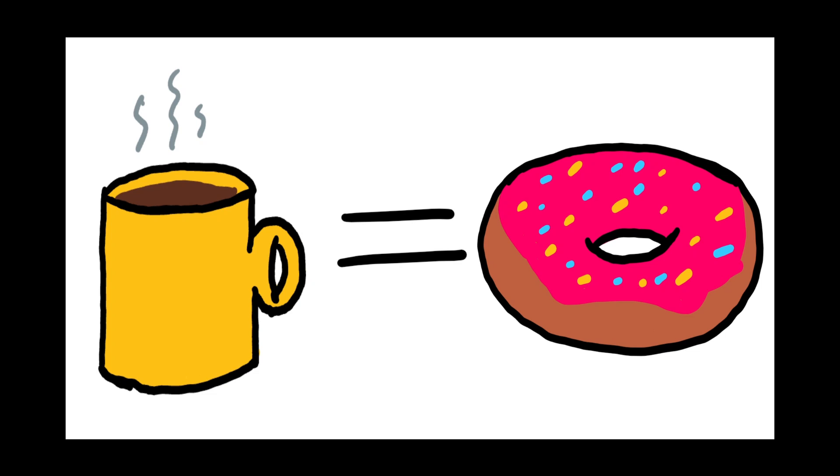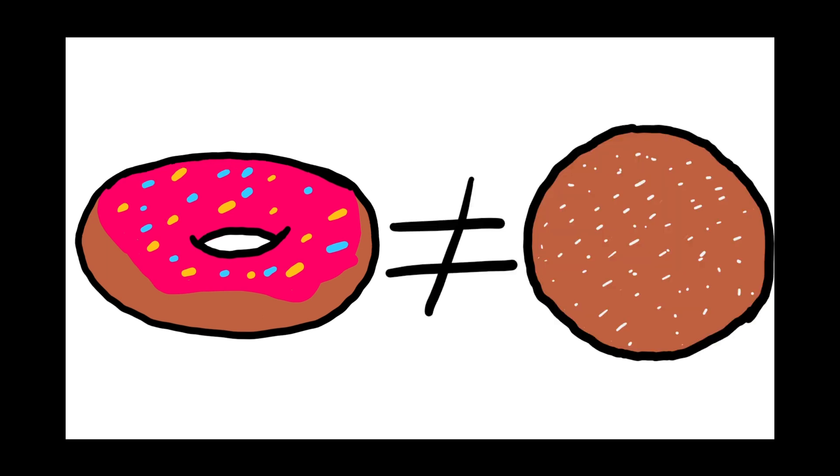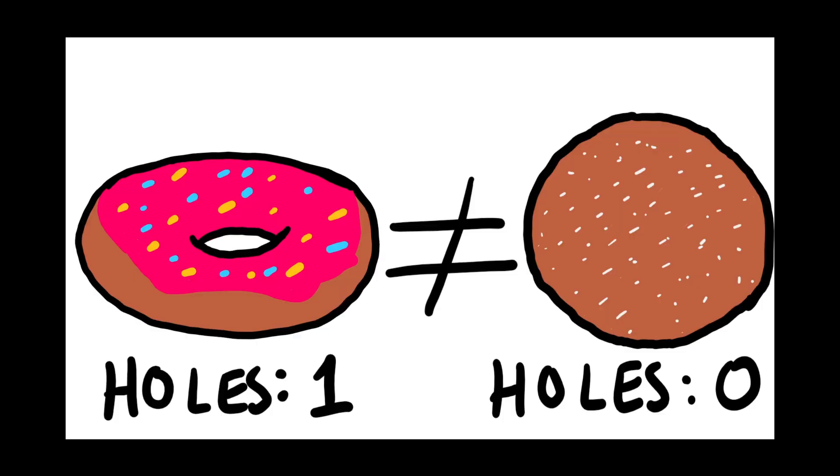We've all heard the joke that a topologist can't tell the difference between a coffee mug and a donut, because you can squish one into the shape of the other. But a topologist can tell a donut from a donut hole because they have a different number of holes.